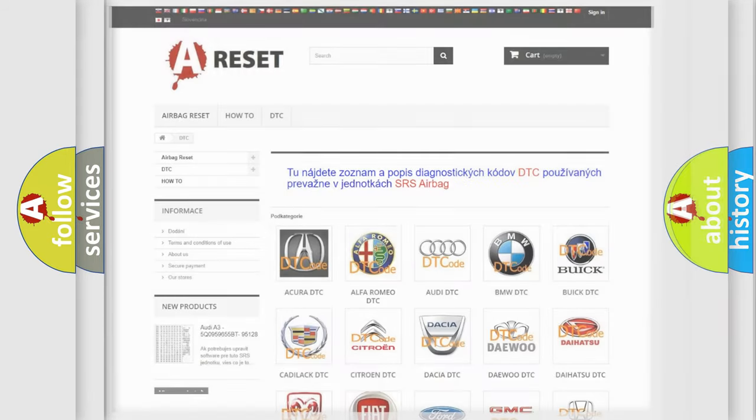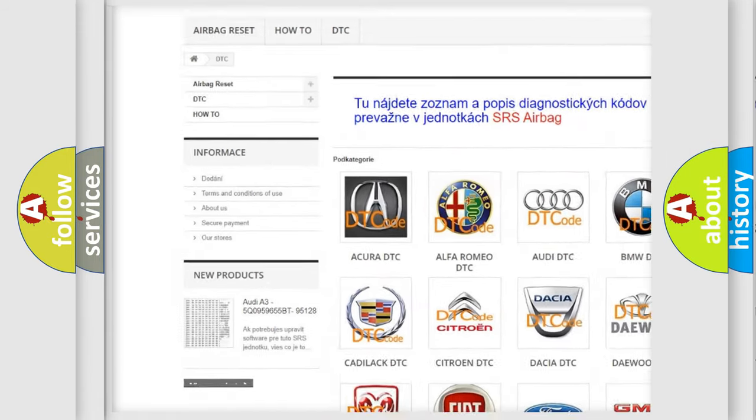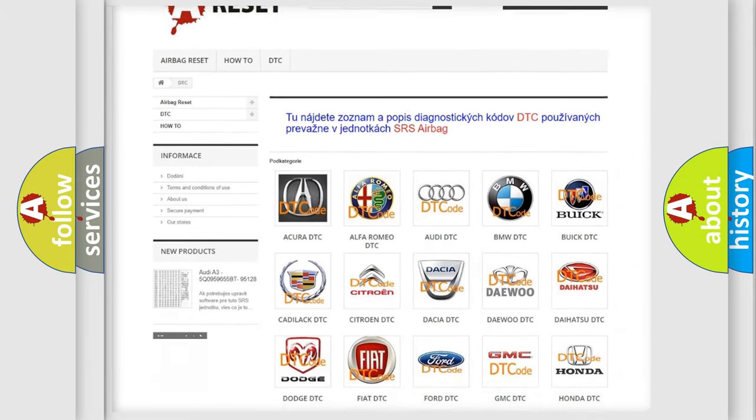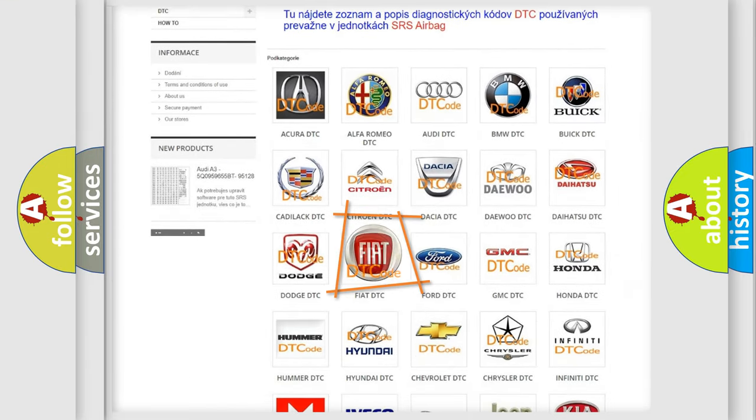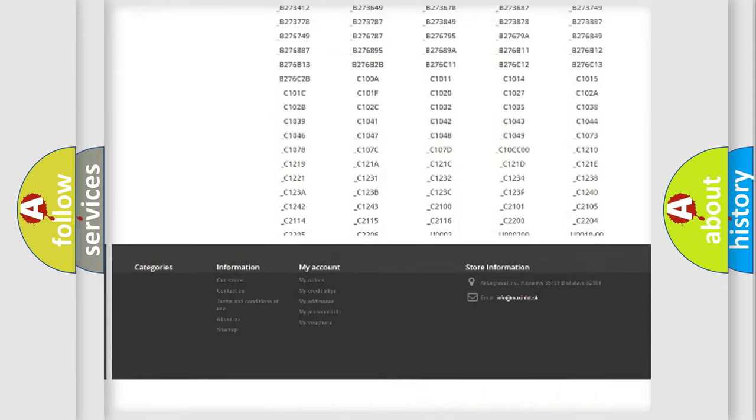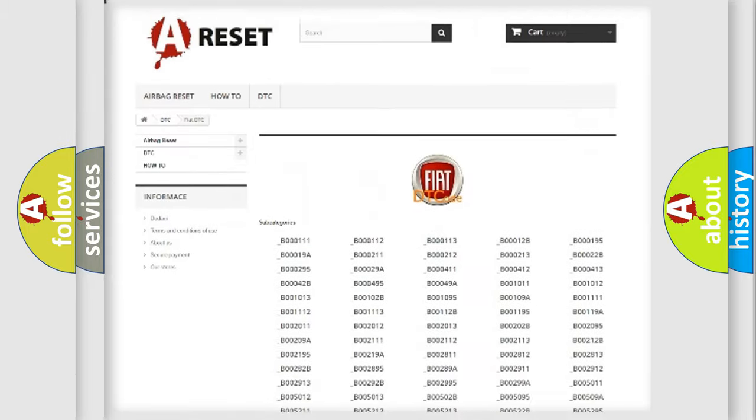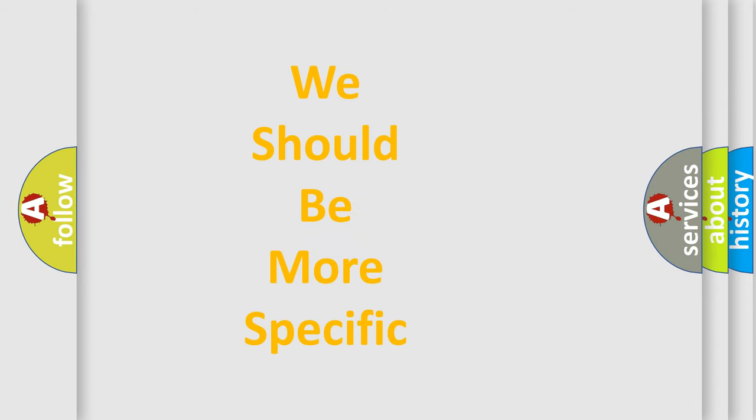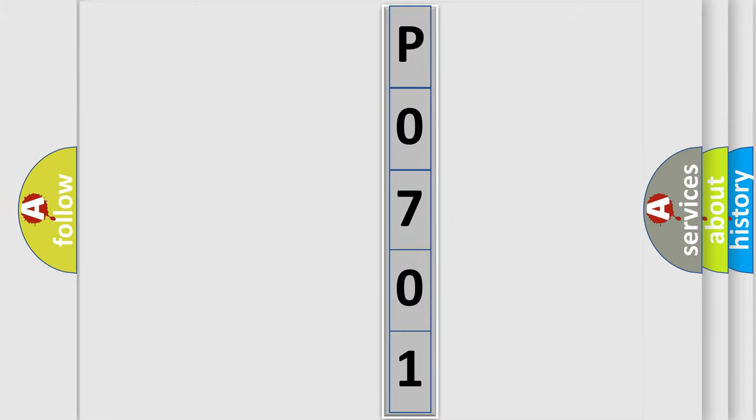Our website airbagreset.sk produces useful videos for you. You do not have to go through the OBD2 protocol anymore to know how to troubleshoot any car breakdown. You will find all the diagnostic codes that can be diagnosed in Fiat vehicles, and also many other useful things. The following demonstration will help you look into the world of software for car control units.